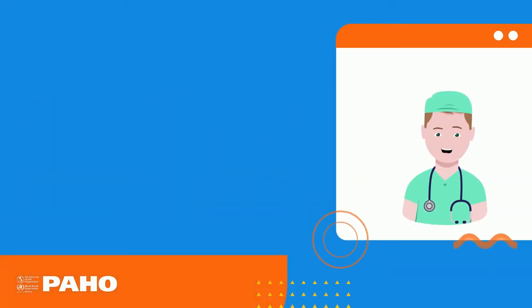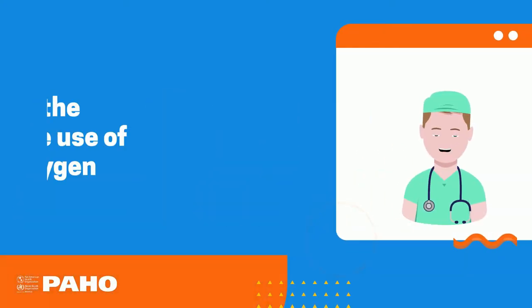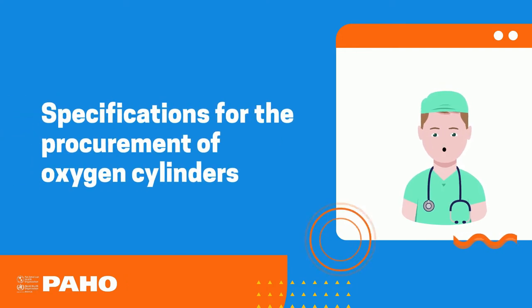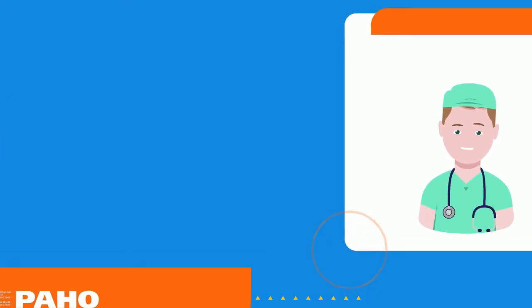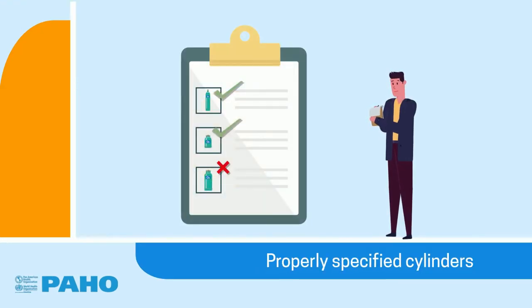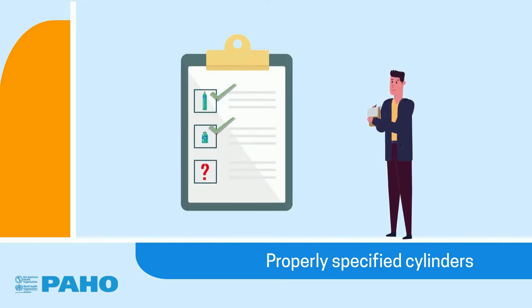This video is part of the series promoting the sustainable use of medical oxygen. Today we explain specifications for the procurement of oxygen cylinders. Properly specified cylinders make gas available more quickly where and when it is needed. When specifications are incomplete, the work of the procurement team increases enormously, delaying the availability of oxygen. That is the reason for this video.